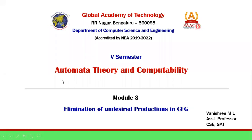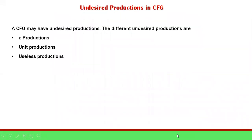Hello students, welcome to Automata Theory and Computability. In this video, we will see the elimination of undesired productions in context-free grammar. CFG may have undesired productions because it depends upon the individuals — the way we write CFG, one person writing CFG may be different from another. The different undesired productions we may obtain are epsilon productions, unit productions, and useless productions.